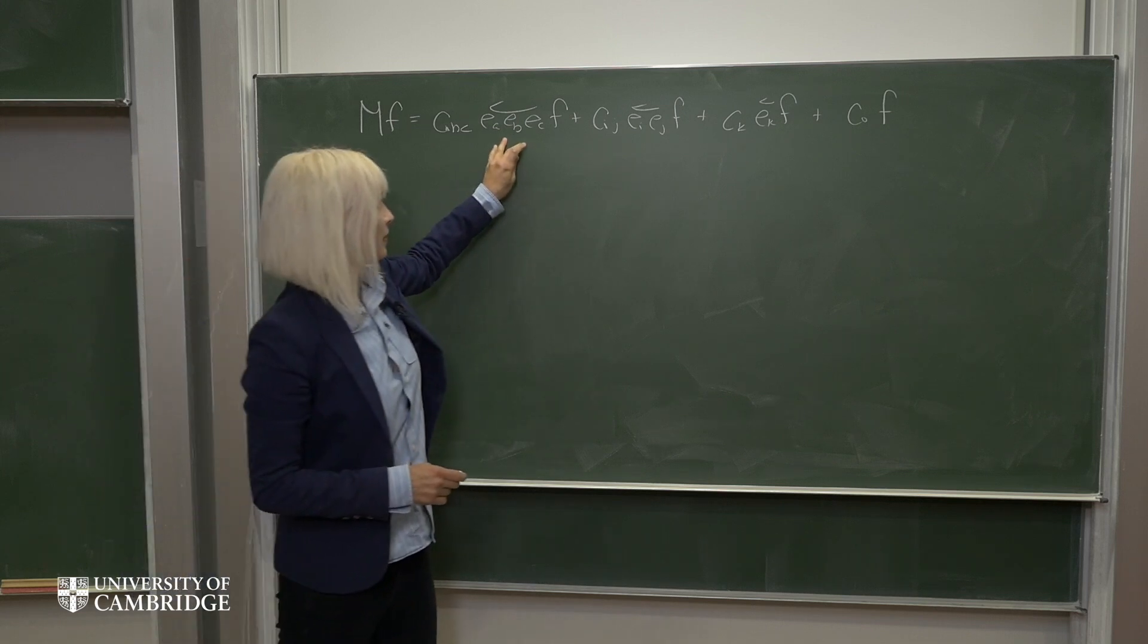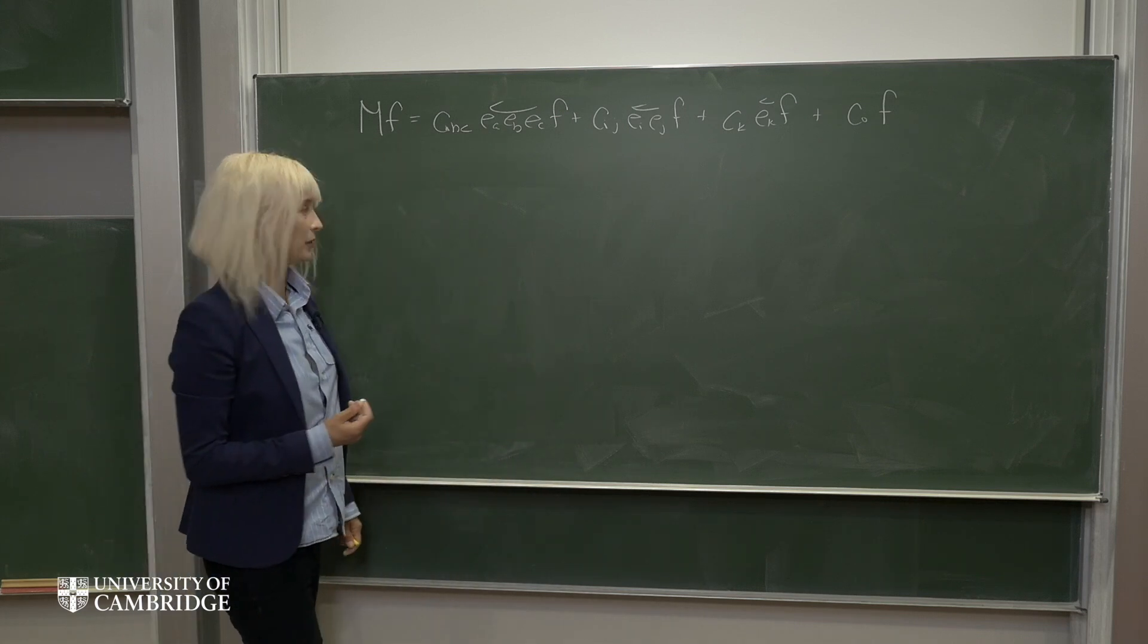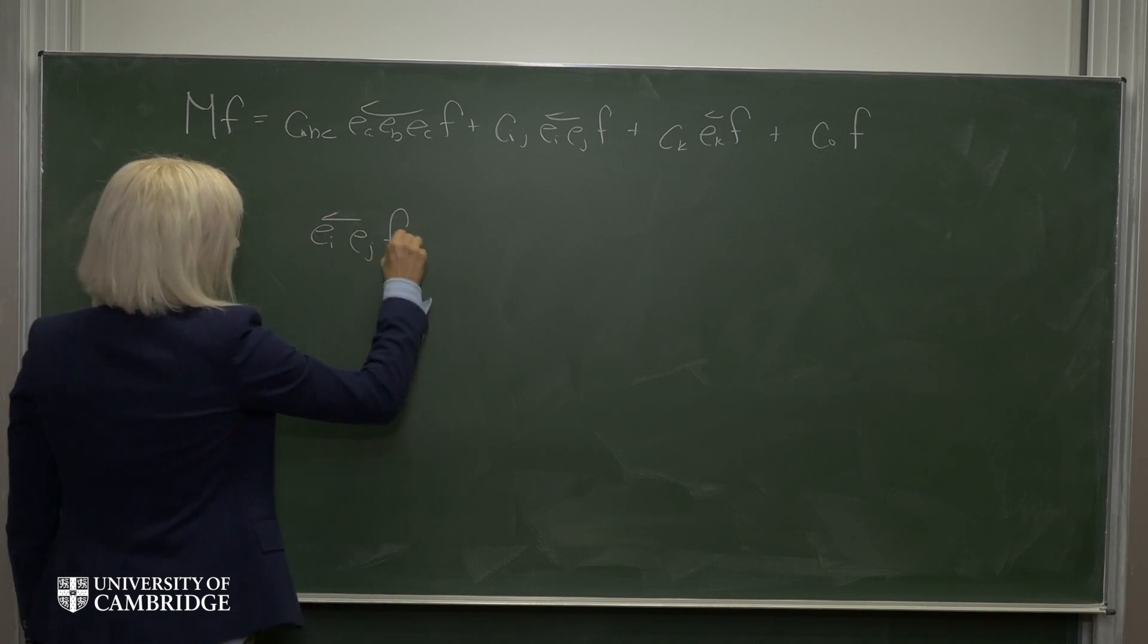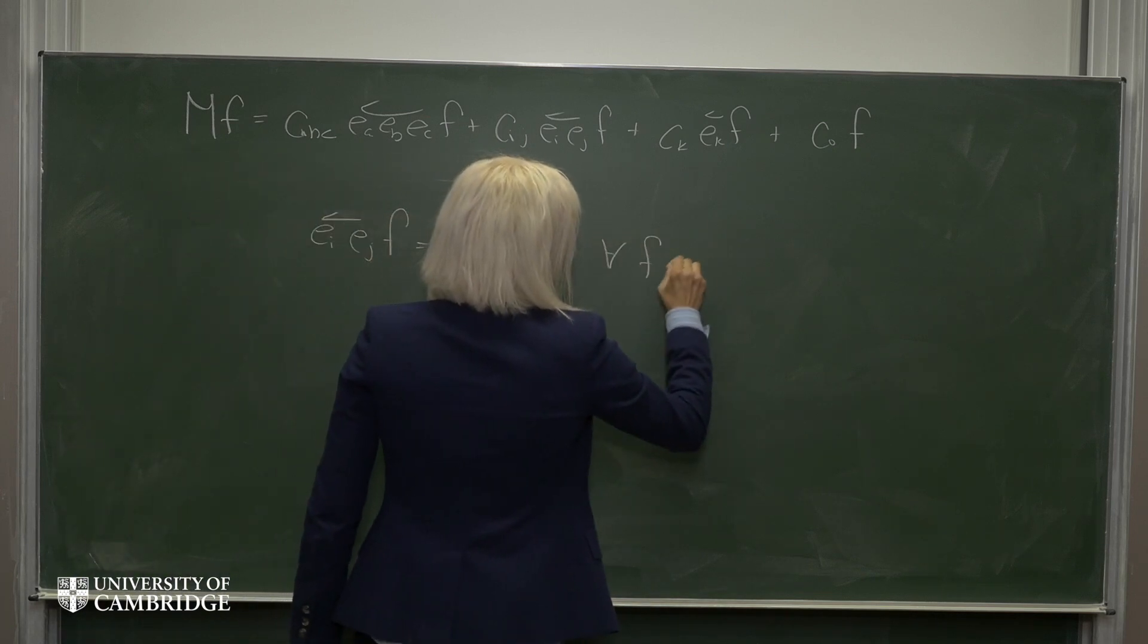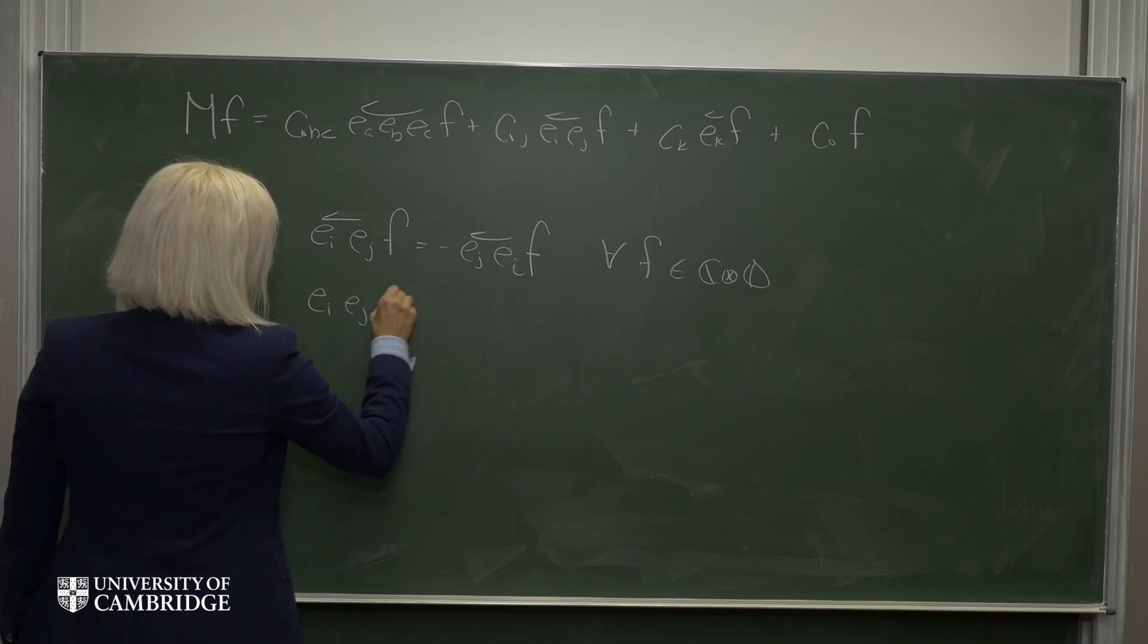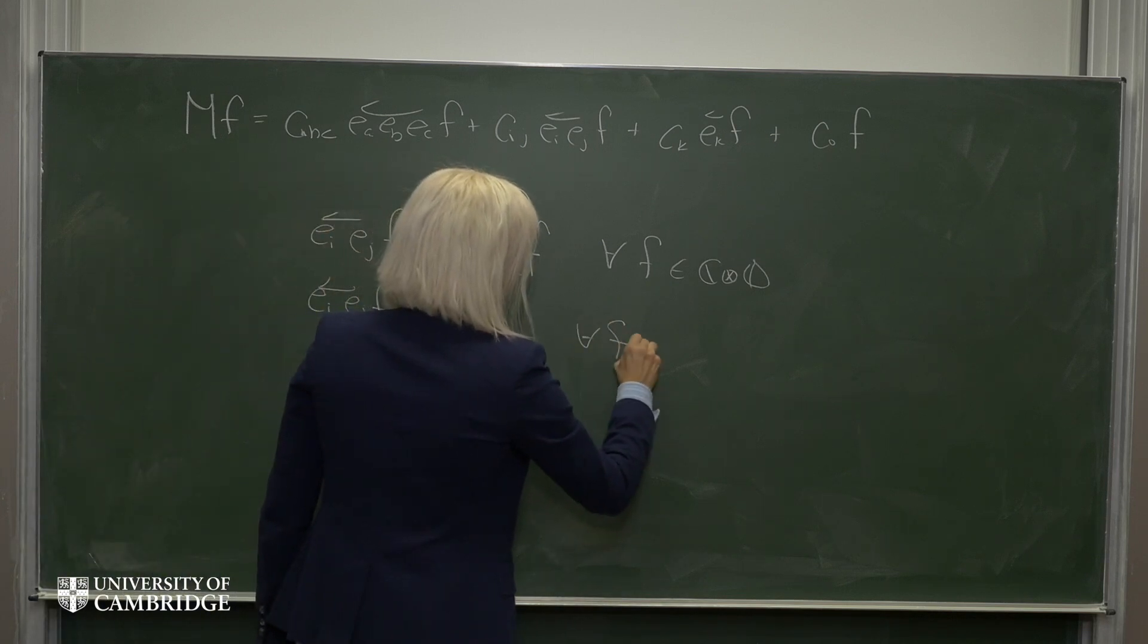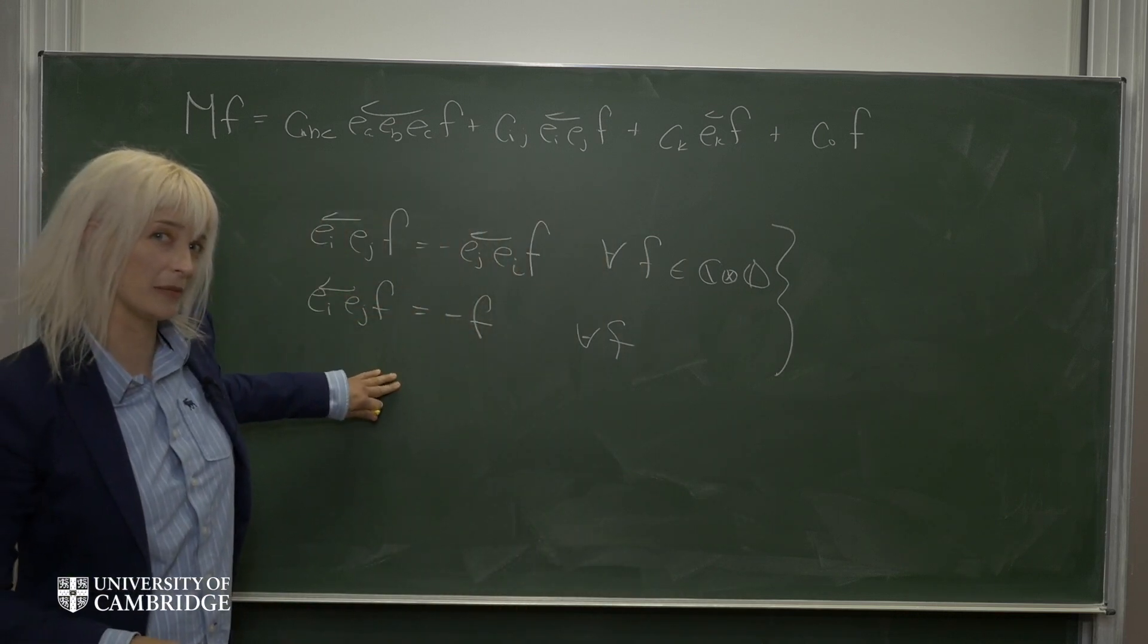Now it turns out that these octonionic chains have some special properties. So for example, when i is not equal to j, then we have that this is true. And when i is equal to j, we have this. So in other words, these chains of octonions exhibit Clifford algebra structure.